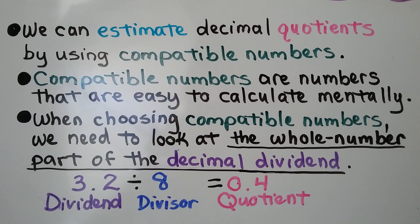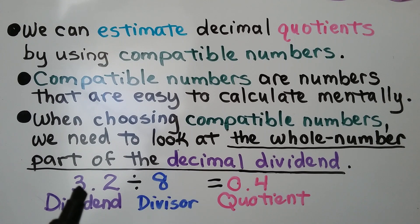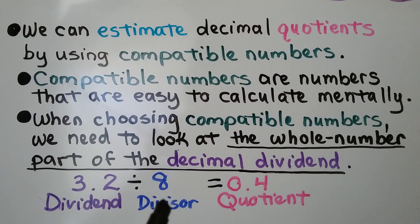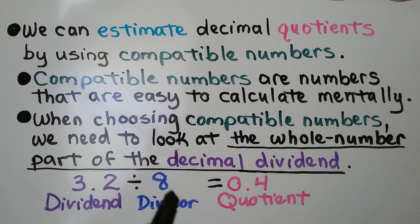When choosing compatible numbers, we need to look at the whole number part of the decimal dividend. So remember: this is the dividend, this is the divisor — it's what we're dividing the dividend by — and the answer is the quotient.